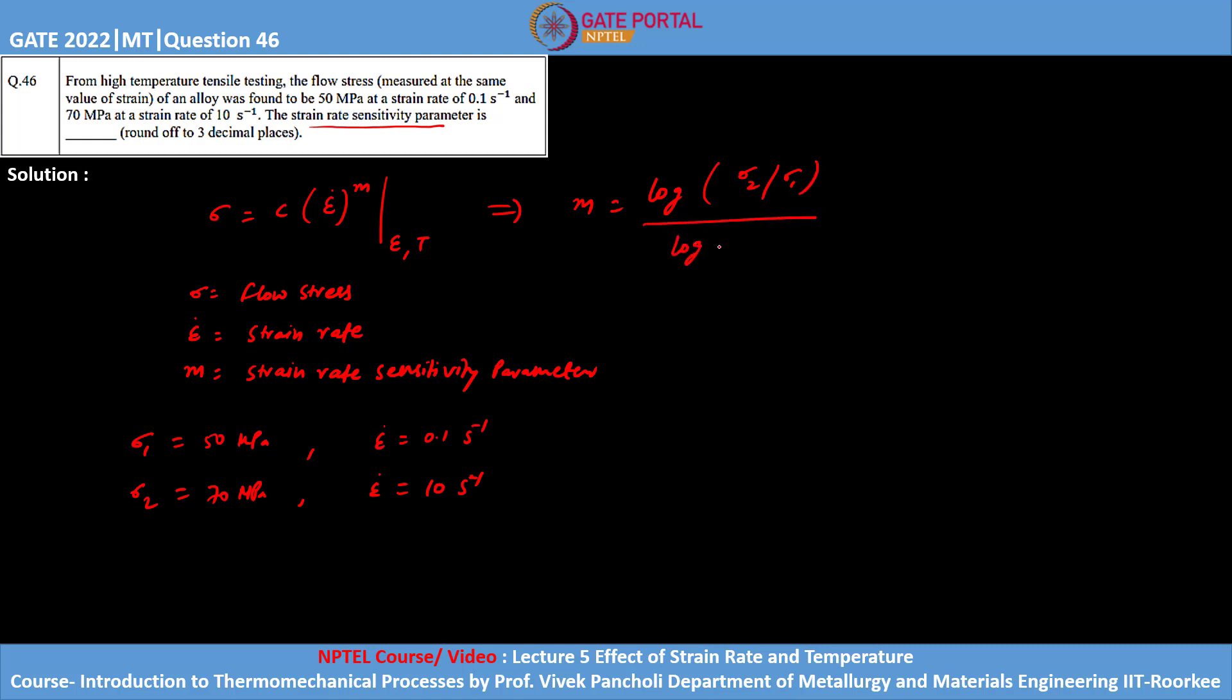For two different values of flow stress and two different values of strain rate, we can calculate the value of m. Simply substitute the values which we have just written.